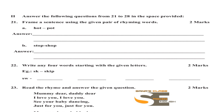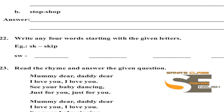Question 22: Write any four words starting with the given letters. They have given the letters 'SW'. From SW you can write: sweet, sweat, swim, and sway. You can write any other SW words.